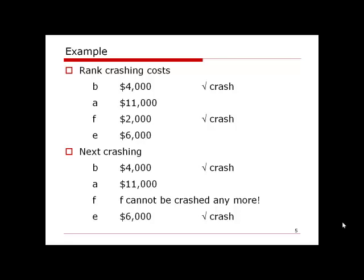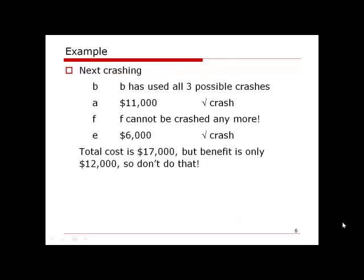For the next potential crash, B has now used all three of its possible crashing weeks, so we would need to crash A at $11,000. Combined with E at $6,000, the total crashing cost would be $17,000. Since the benefit is only $12,000 per week saved, it is not financially worthwhile — we would spend more than we save, so we stop crashing.